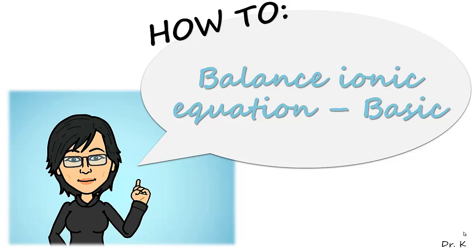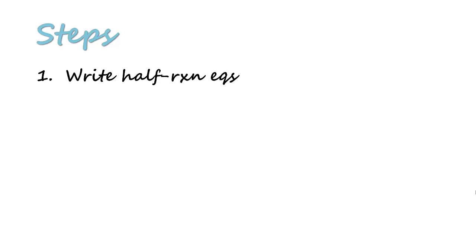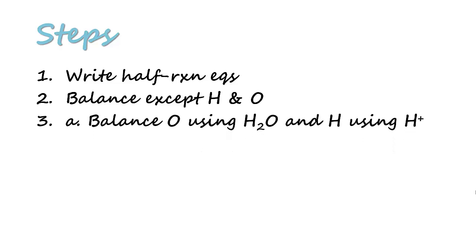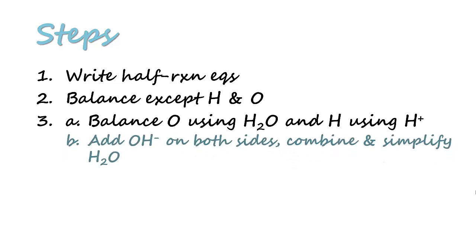In this video we are going to see how to balance ionic equations in basic solution. There are six steps in doing so, which is very similar to acidic solution. The first step is writing out the half reaction equations, followed by balancing all elements except for hydrogen and oxygen, and then we use water to balance oxygen and H⁺ to balance hydrogen. Up to this point it is very similar to balancing in acidic condition, and this is the additional step for balancing in basic condition.